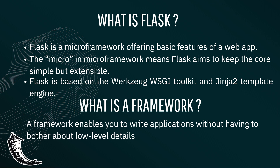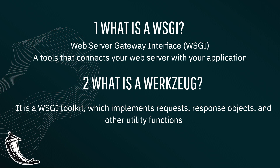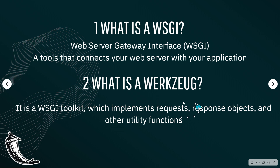So you won't be bothered about the low-level details. WSGI stands for Web Server Gateway Interface — it's an interface that connects your web server with your application. Django uses ASGI, which is Asynchronous Server Gateway Interface, the successor of WSGI. WSGI uses a toolkit called Werkzeug, which is a German word: 'Werk' means work and 'Zeug' means stuff, so 'Werkzeug' essentially means a tool. It's a toolkit used by WSGI to implement request and response objects.